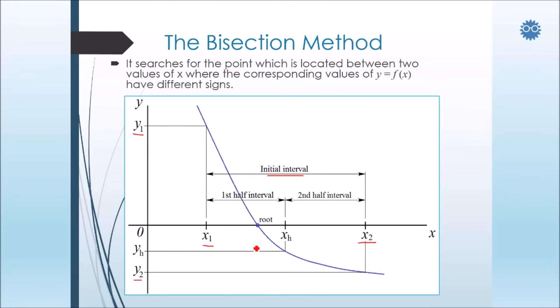Now, if we have a root between x1 and x2, we start the bisectioning procedure. So we'll compute the value of xh, and then we make a check again by seeing the difference between the value of yh and y1 to see if the root is located in the first half interval or in the second half interval.